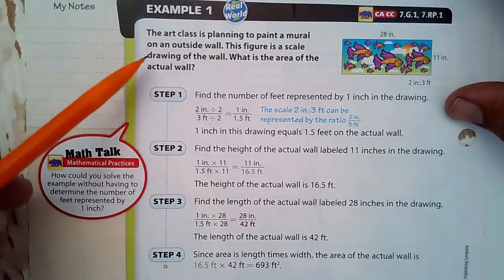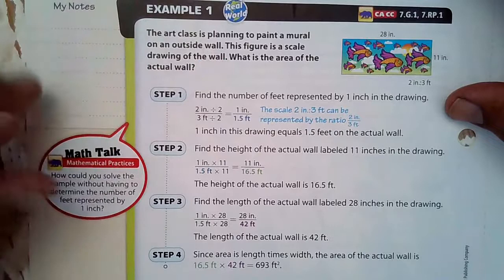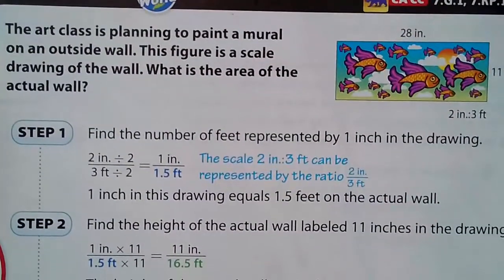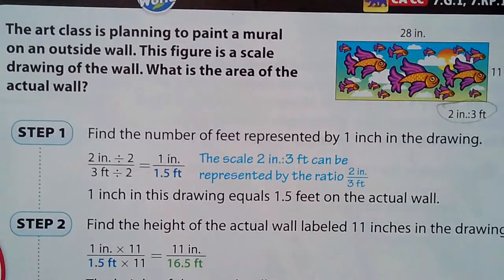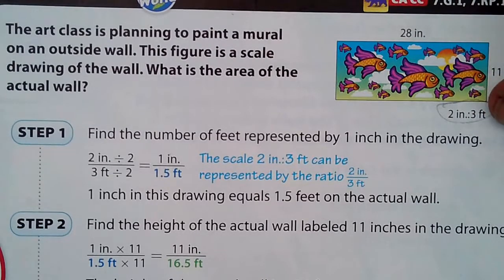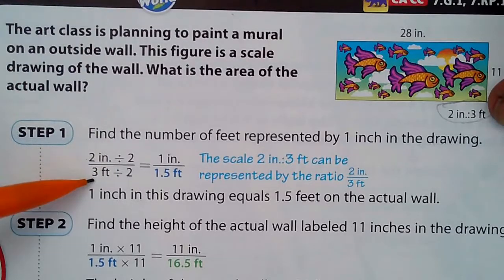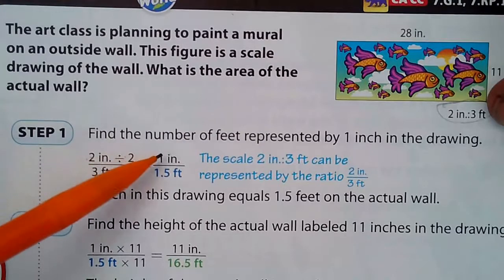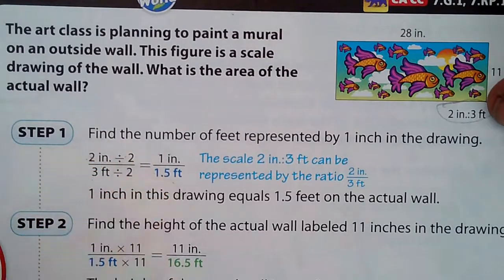The art class is planning to paint a mural on an outside wall. The figure is a scale drawing of the wall. We find the number of feet represented by 1 inch in the drawing. The scale is 2 inches in the drawing represents 3 feet in real life — so 2 inches to 3 feet. Dividing by 2, that means 1 inch represents 1½ feet in real life.